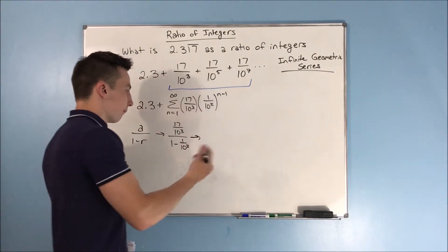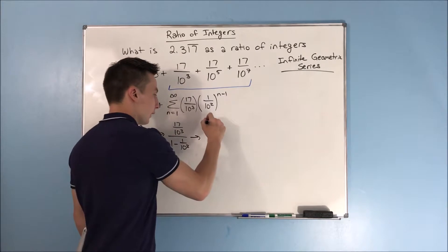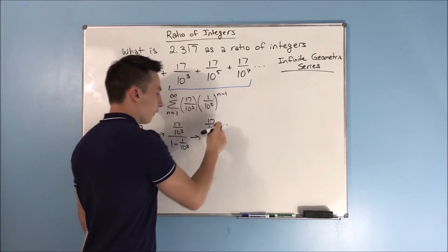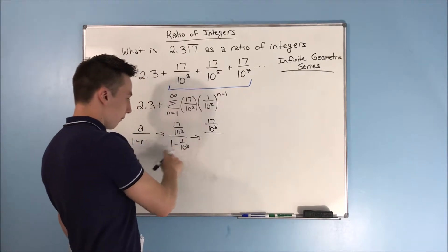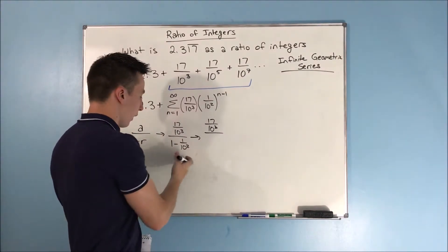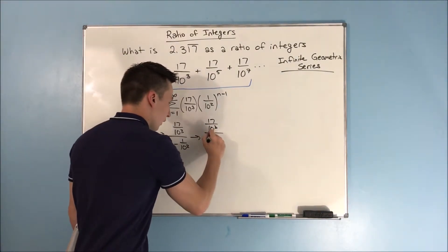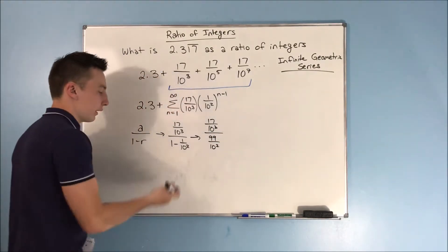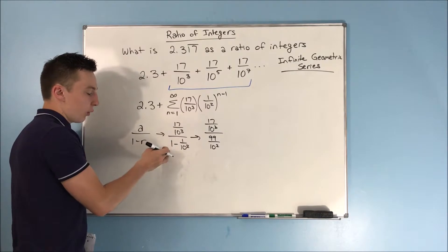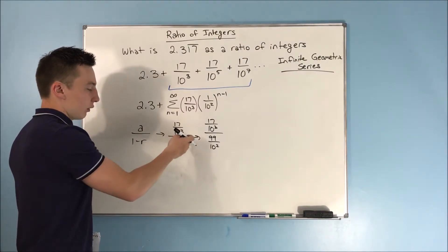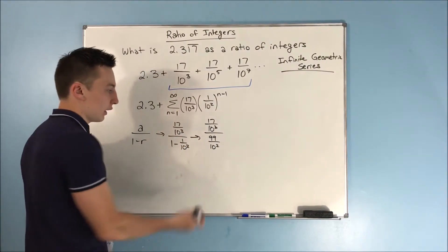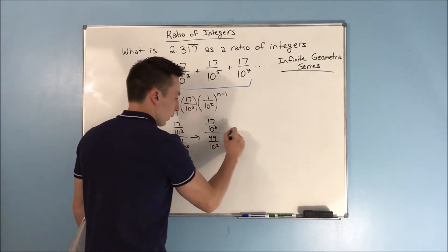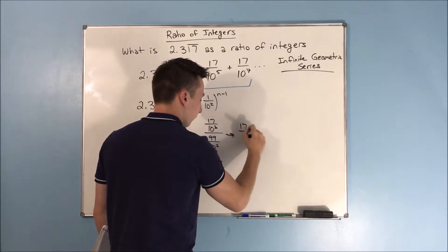If you do this out, you get 17 over 10³, and then doing just this part out, you get 99 over 10². This is essentially just 100 over 100 minus 1 over 100, which is 99 over 100. So from there, if you want to just flip this, I'll show you each step.